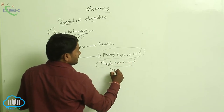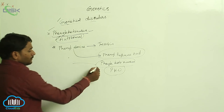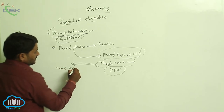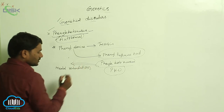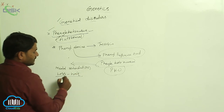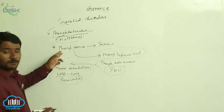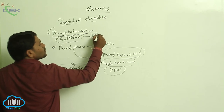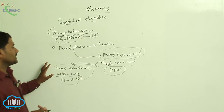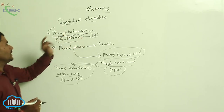Phenylketonuria is also called PKU. The symptoms of phenylketonuria are mental retardation and loss of pigmentation. The gene responsible for this character is present on the 12th chromosome. This is an autosomal recessive disorder.